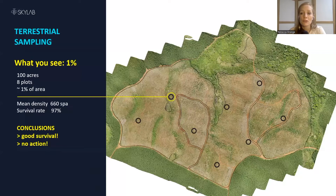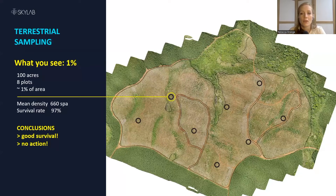The traditional way of monitoring the progress of your plantations, as you will know, is by terrestrial sampling. This is an example of a new pine plantation where the customer has set up eight plots over the 100 acres of their stand and calculated a mean density of 660 seedlings per acre, which equates to a 97% survival rate.